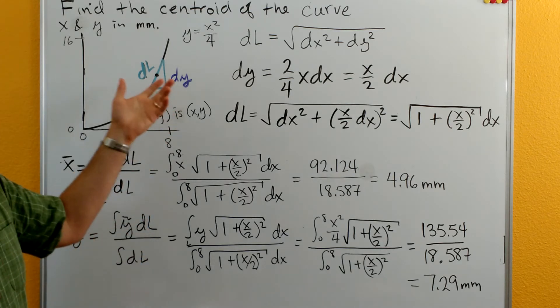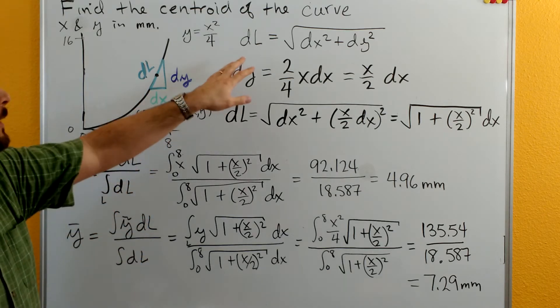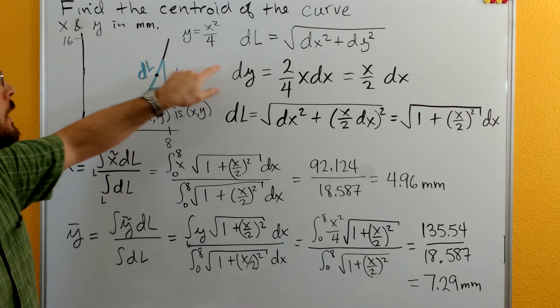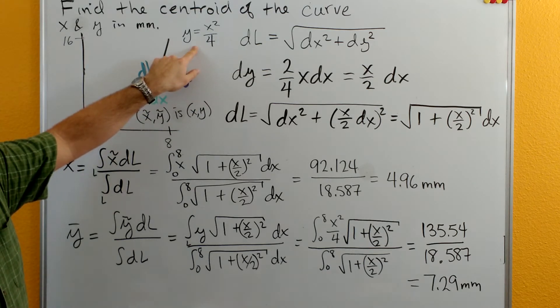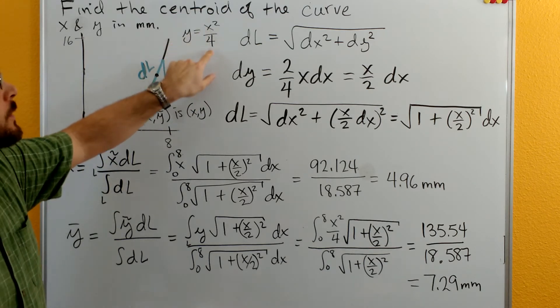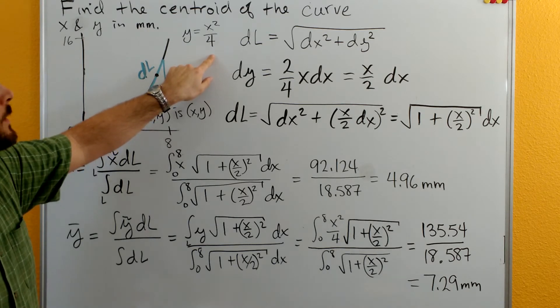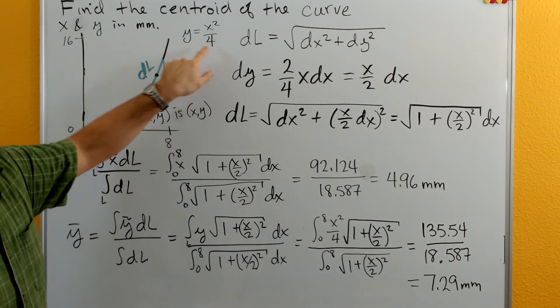I'm going to get rid of y out of this equation. Going back to our equation for the curve, y is equal to x squared divided by 4. Let's take a differential now on both sides.